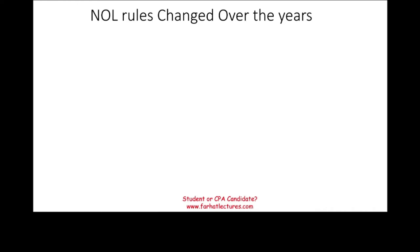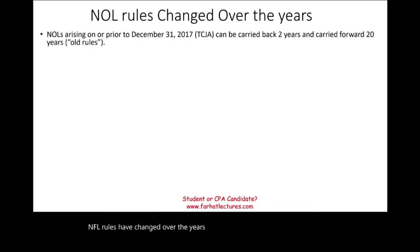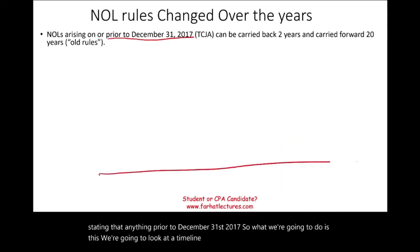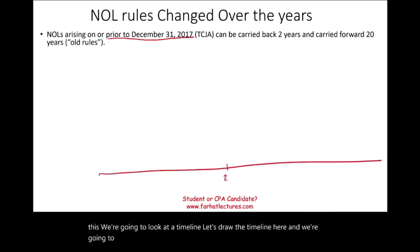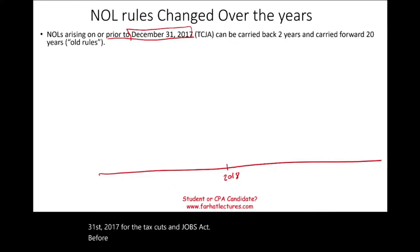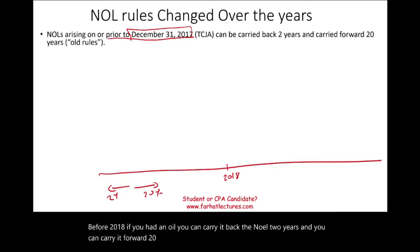NOL rules have changed over the years. Anything prior to December 31st, 2017 falls under the old rules. Looking at a timeline, before 2018 — the Tax Cuts and Jobs Act changed the rules as of December 31st, 2017 — if you had an NOL, you could carry it back two years and carry it forward 20 years. Those are the old rules. I put 'old rules' in quotes because they could still be in effect for certain periods.